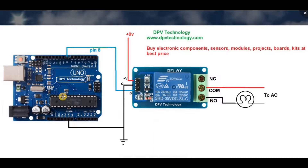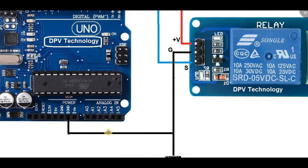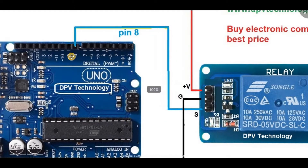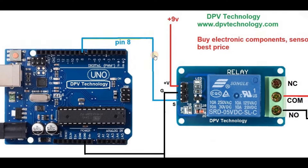Now at the input side, we can see the VCC pin of the relay module is connected to the positive terminal of the external 9V battery. Then the ground pin of the relay module should be connected to the ground pin of the 9V battery. Also, we have to connect the ground pin of the relay module to the ground pin of the Arduino. We can connect the signal pin of the relay module to any digital pin of the Arduino. In our case, we have connected it to pin number 8 of the Arduino.